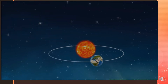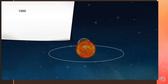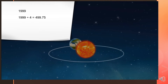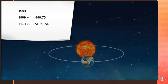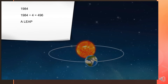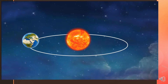Find out from your teacher about the next leap year. How can you identify whether a year is a leap year or not? Let's see some examples. The year 1999 — if we divide 1999 by four, the result is 499.75. It is not completely divisible by four, therefore it is not a leap year. The year 1984 — if we divide 1984 by four, the result is 496. It is completely divisible by four, which means that 1984 was a leap year.